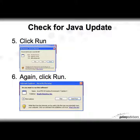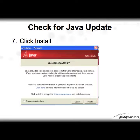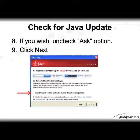Then in step six you'll get a little message box again — click run again. In here you're going to get a message asking you to click install, so just click install. Finally, it's going to ask if you want to add a browser add-in called Ask. If you wish, you can uncheck that Ask option and then click next.